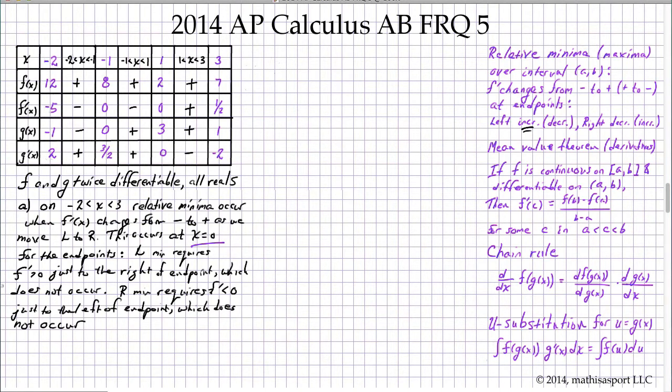Part B. We'll start it here. We may have to continue it elsewhere. Why must there be a value where f double prime of c equals 0? Well, it's because the mean value theorem applies to f prime of x. So I'm going to write that, the mean value theorem.